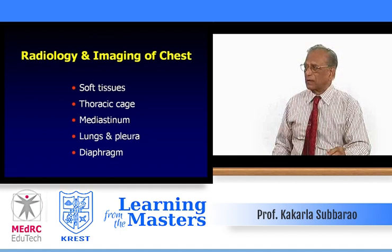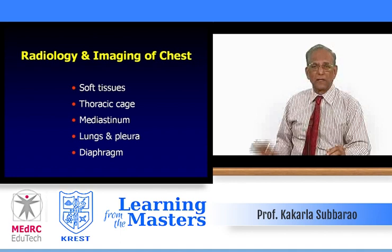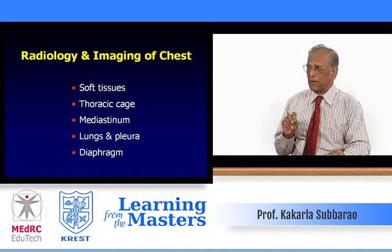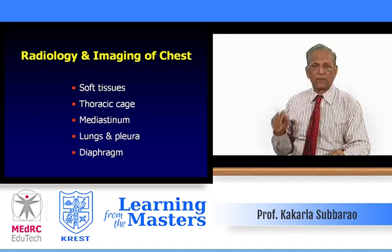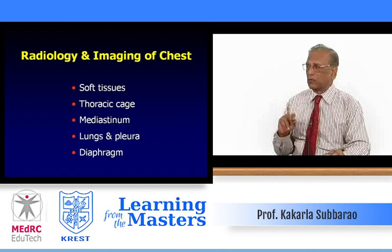In radiology and imaging of the chest, what are the structures that you see on a chest film? First, the soft tissues and the bone in the thoracic cage, then the mediastinum, then the lungs, pleura, and of course the diaphragm. When we talk of pleura, the costophrenic and cardiophrenic angles on both sides.